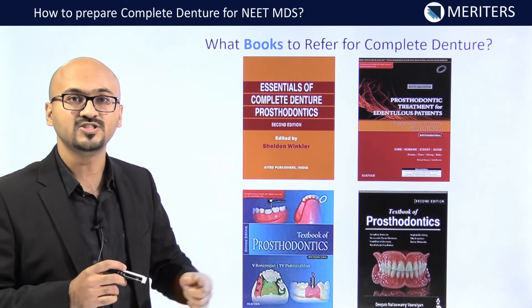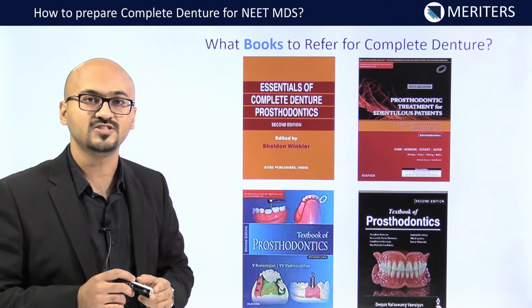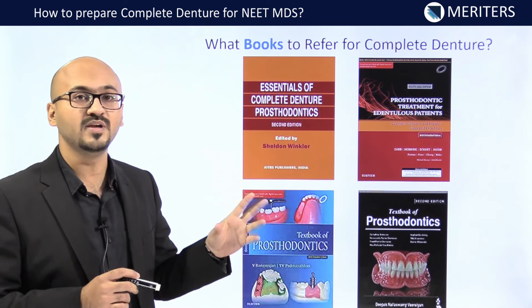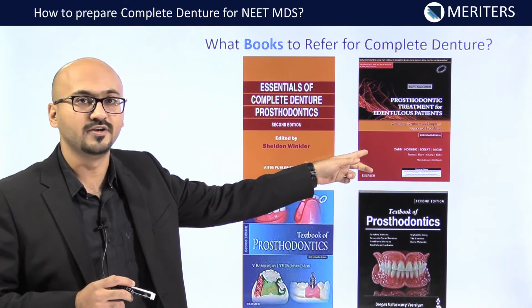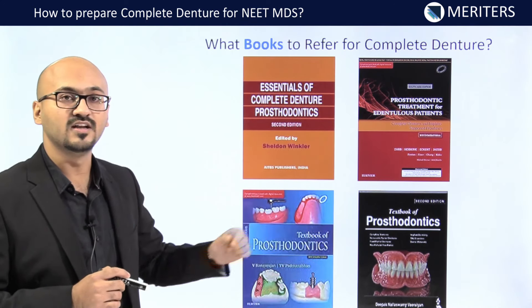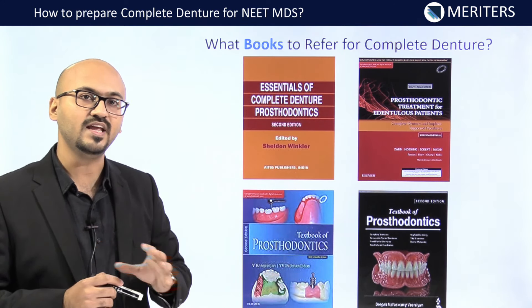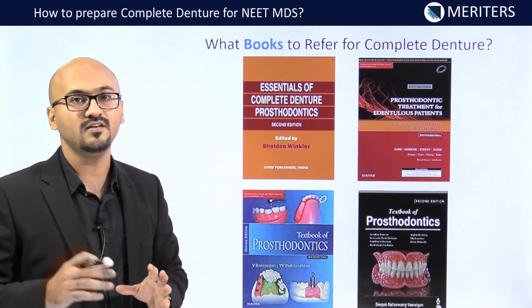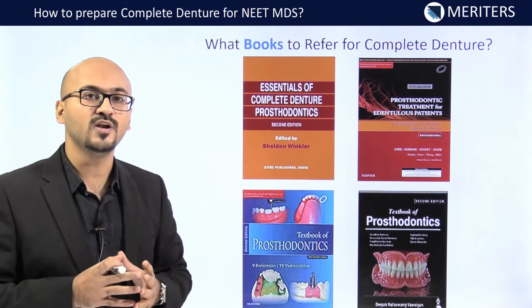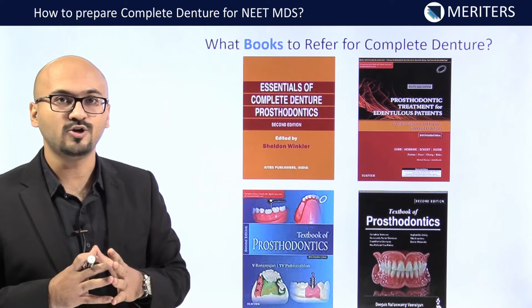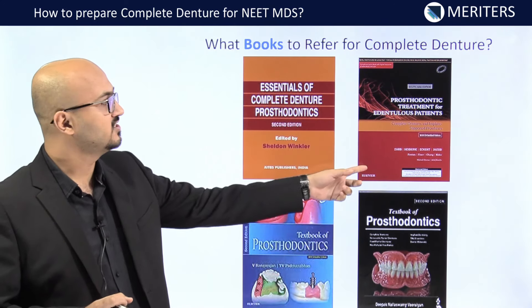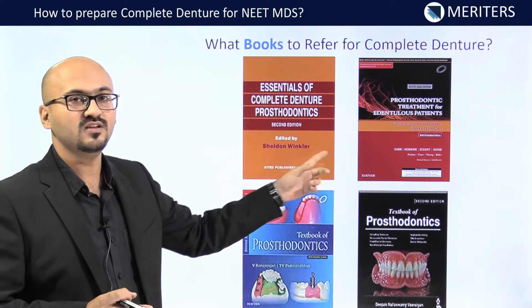Zarb and Bolender is very good for impressions and jaw relations, and you can expect many image-based questions from it. Rangarajan and Nallaswamy have emphasized all topics in detail. For conceptual understanding of any topic, come to these Indian author books first, then use the other two for image-based questions.